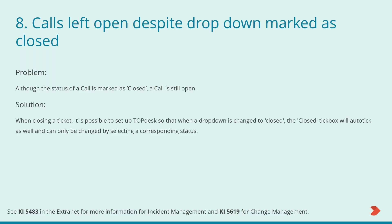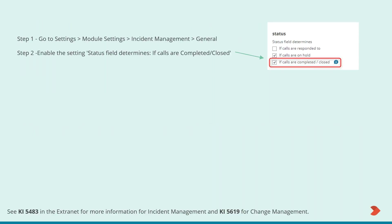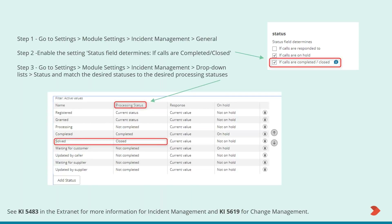The solution is doable in the Topdesk settings itself. You can set up Topdesk so that when the dropdown changes to 'close', the checkbox will auto-tick, removing human error. For incident management, you need to ensure that the status checkbox in the general settings of incident management has been checked to show that the status will determine that calls have been completed or closed. Once saved, make sure the status matches the desired processing status, which you can find in the dropdown setting of incident management within the module settings. There are two knowledge items on the slides depending on whether you want this for incident management or change management.